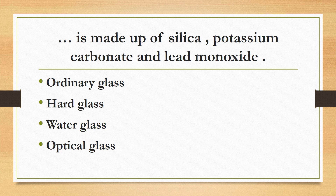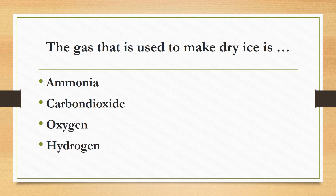The gas that is used to make dry ice is: ammonia, carbon dioxide, oxygen, or hydrogen? The correct answer is carbon dioxide. Carbon dioxide, when cooled to minus 78 degrees, forms a white solid known as dry ice. Dry ice is used as a refrigerant for preserving foods.